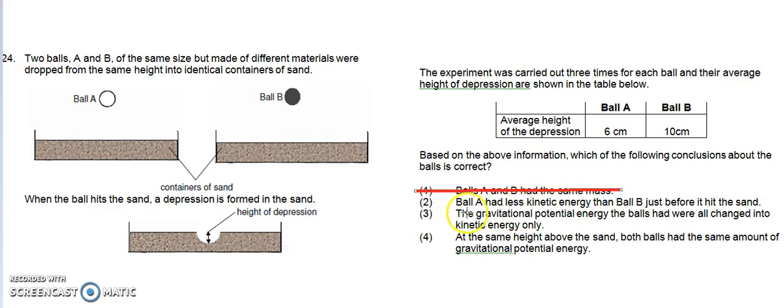Option 2: Ball A had less kinetic energy than ball B just before it hit the sand. This is true because the mass of the balls were translated into different kinetic energies. Ball A, which had the lesser average height of depression, most probably had less kinetic energy than ball B just before it hit the sand.